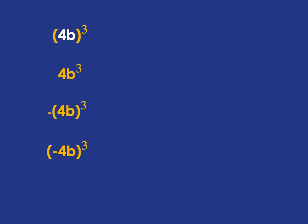In the first one, we have 4b in the bracket that's all being cubed, so that means we're taking 4b, multiplying it by 4b, multiplying it by 4b, and as we've just seen, that's going to be 4 times 4 times 4 is 64, b times b times b is b cubed.